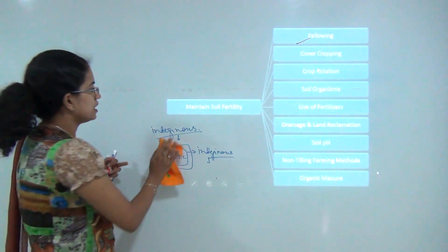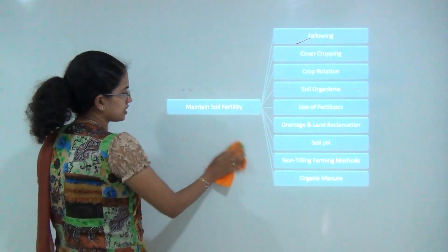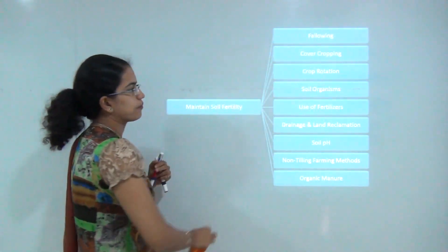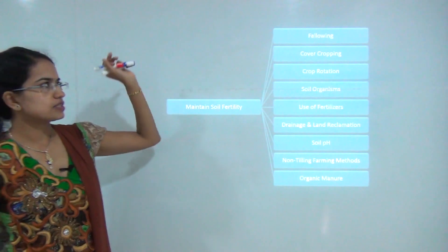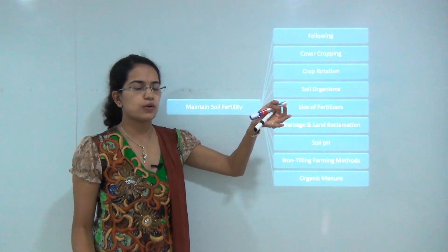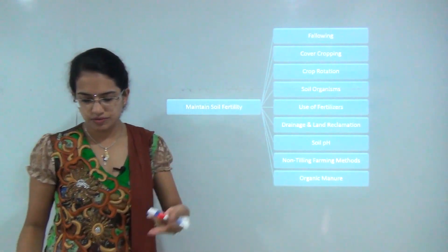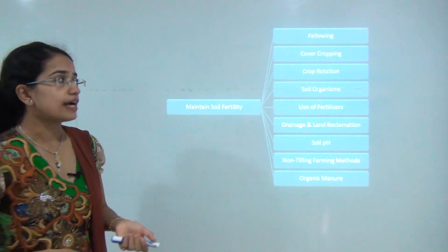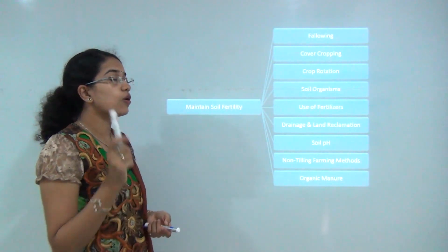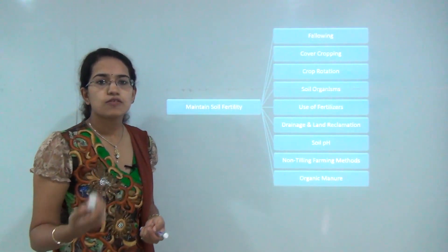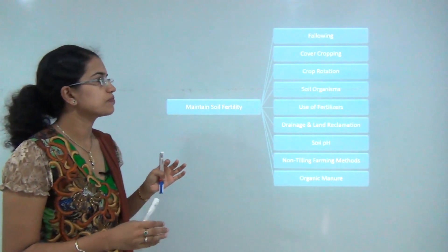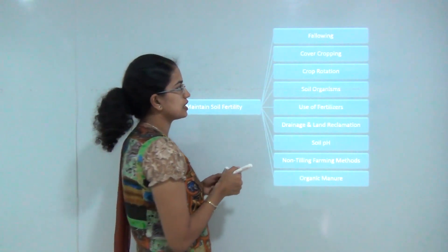The next topic is how to maintain soil fertility. There are various methods. The first is fallowing — though we mentioned that leaving land fallow can cause runoff, leaving land fallow as in shifting cultivation also promotes and regains soil fertility. If you leave a section of land fallow for a period of time, the soil fertility is regained.